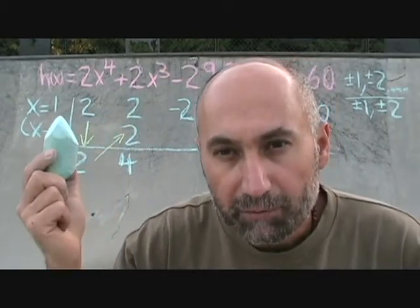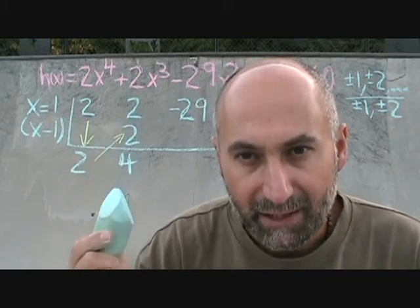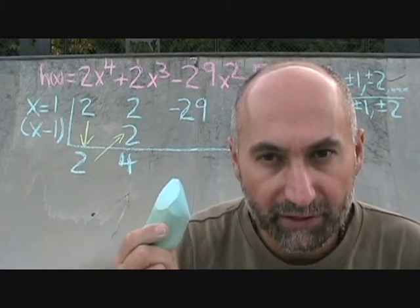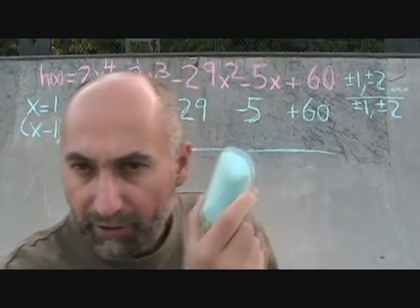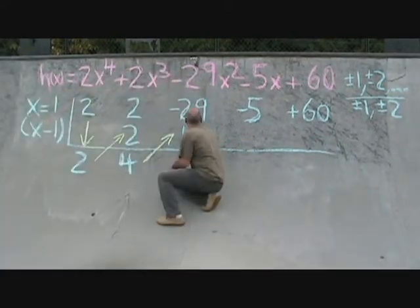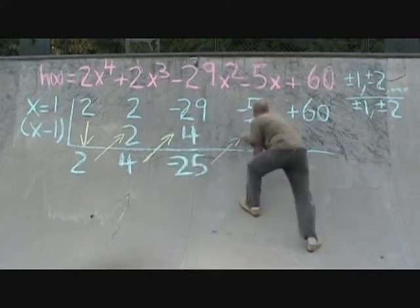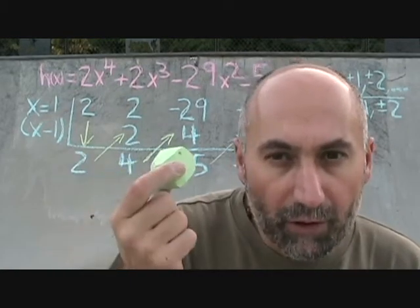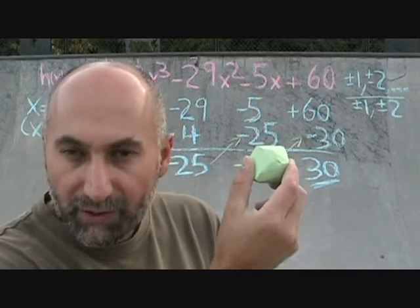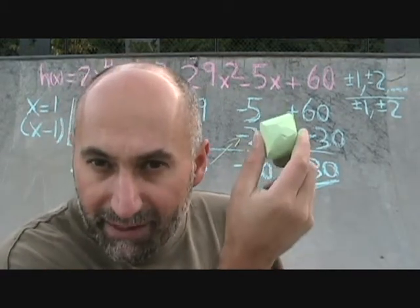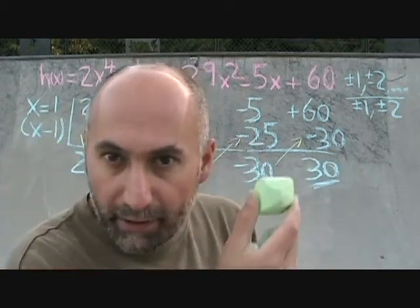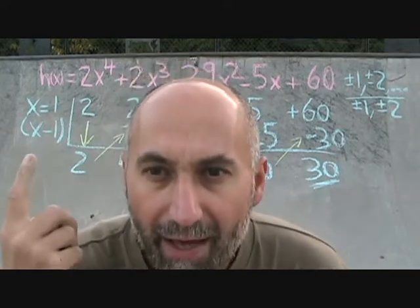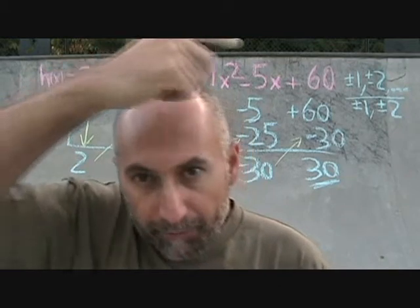The 2 comes down, you multiply by 1 — 1 times 2 is 2 — and you add to get 4. Then 1 times 4 goes up and you add those to get the next value, and so on. 1 multiplies by 4, 4 comes up, add them to get negative 25. Negative 25 times 1 is negative 25. Negative 25 plus negative 5 is negative 30. Negative 30 times 1 is negative 30. Add them together, you get 30. The remainder is not zero, so x minus 1 is not a factor of the polynomial.